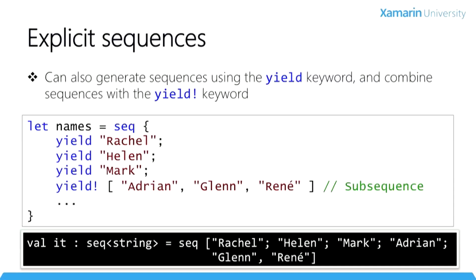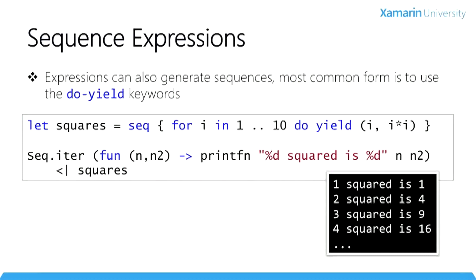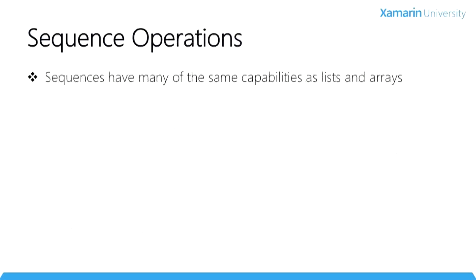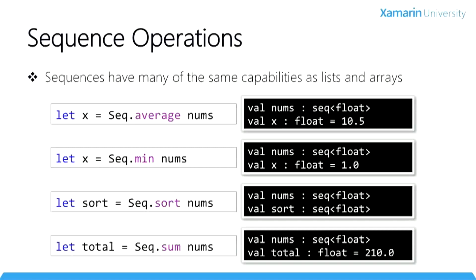A variation on the yield keyword is to combine it with an expression. Here we see code to create squares from 1 to 10, returning a tuple containing the original value and its square. We then use the built-in Sequence.iter method to iterate the sequence, passing an evaluation function — similar to List.ForEach in C-Sharp. Sequences also have a bunch of operations like arrays and lists — for example, with a sequence nums from 1 to 20, you can average, get the minimum, sort, and sum the sequence.